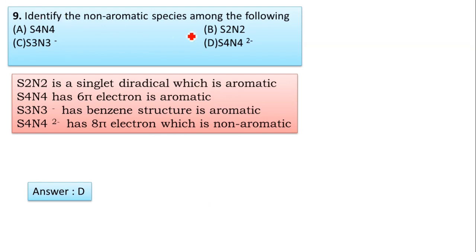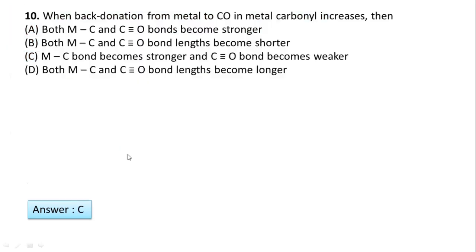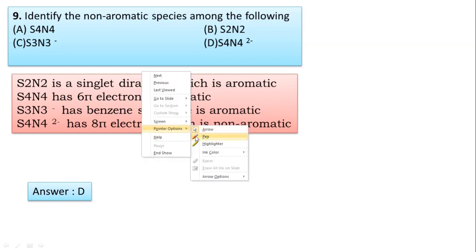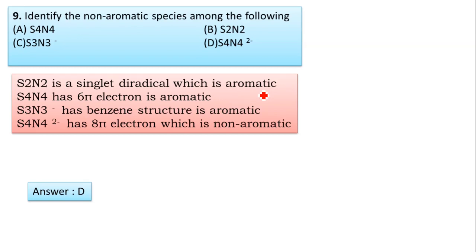Question number 9: Identify non-aromatic species among S4N4, S2N2, S3N3-, S4N4 2-. S2N2 is a singlet diradical which is aromatic. S4N4 has 6π electrons, it is aromatic. S3N3- has benzene structure, also aromatic. Hence S4N4 2- has 8π electrons, which means it is non-aromatic or anti-aromatic. Correct option is D, S4N4 2-.